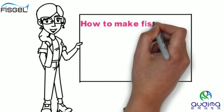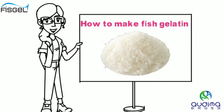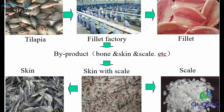How to make fish gelatin: we take the raw materials of tilapia fish skin and scales as examples to briefly demonstrate the production process. Our company is located in the main tilapia farming area with abundant raw materials. Fish scales and skins are byproducts of the tilapia processing plant. After they are purchased, they are separated and cleaned to be used as raw materials for gelatin.